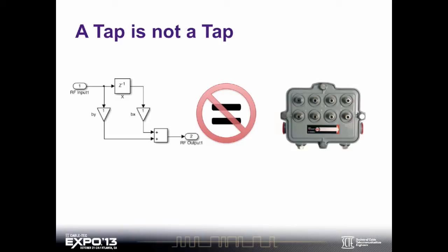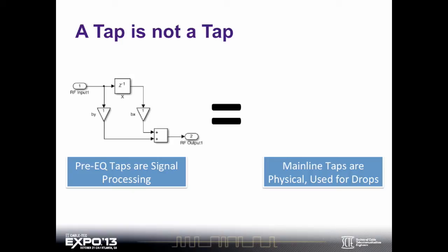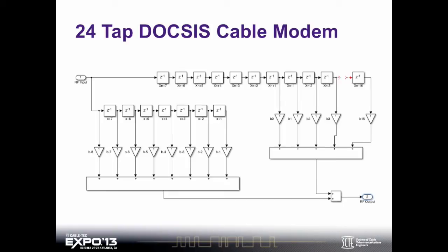So I've used the word 'tap' twice. The mainline tap is what we use to drop coaxial cables into subscribers' homes. I want to make sure we understand that on the left, these pre-EQ taps are used for signal processing, and on the right, that mainline tap is used for dropping coax cables to subscribers' homes. Equalizer taps are very different than mainline taps, and we want to make sure that terminology is not mixed up. A DOCSIS cable modem has 24 taps in it. This is a very complex image, but I just want to show the architecture to help you understand there's a lot of complexity in a DOCSIS 2.0 cable modem — 24 taps that give us the ability to shape the signal before we pre-distort it and transmit it to the CMTS.